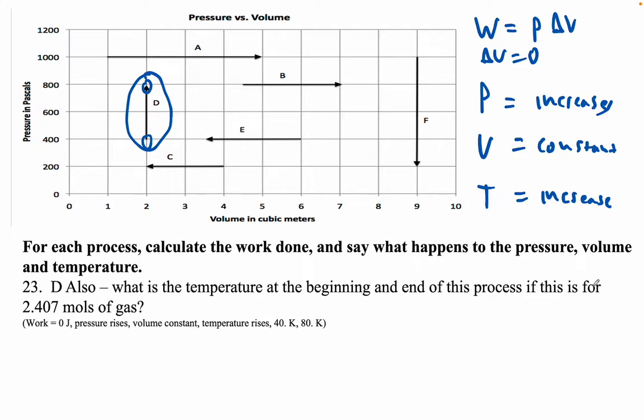It says what is the temperature at the beginning and end of this process if this is for 2.407 moles of gas? If we figure out the temperature at the beginning of D, the temperature at the end will be twice that. We're going to use ideal gas law, so PV = nRT, therefore T = PV/nR.